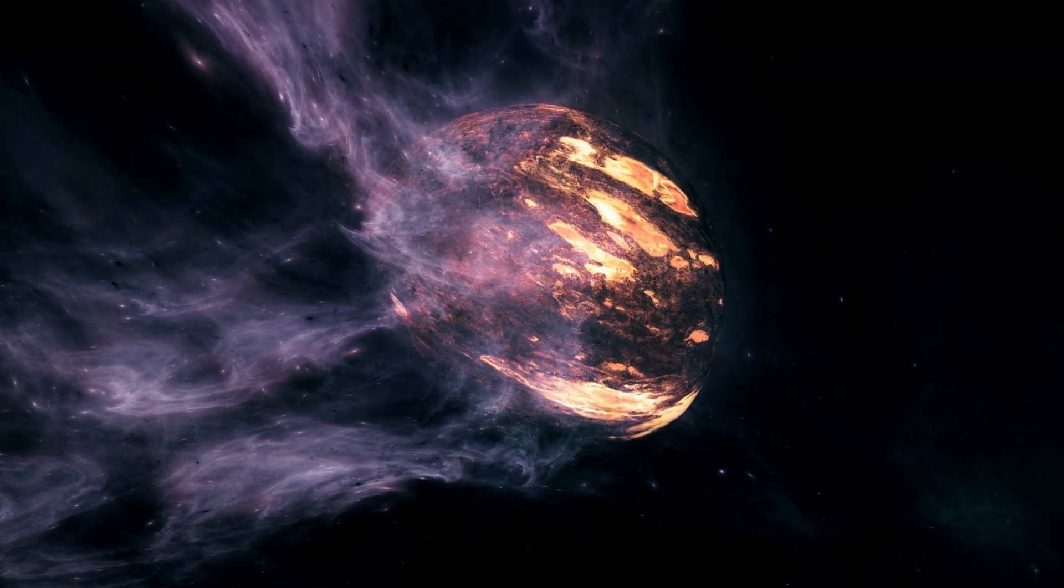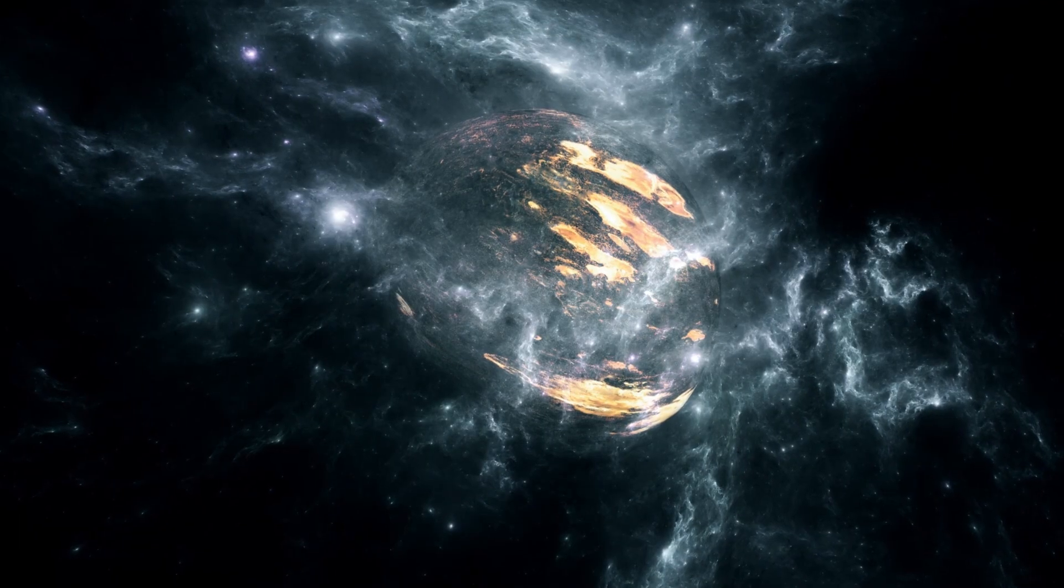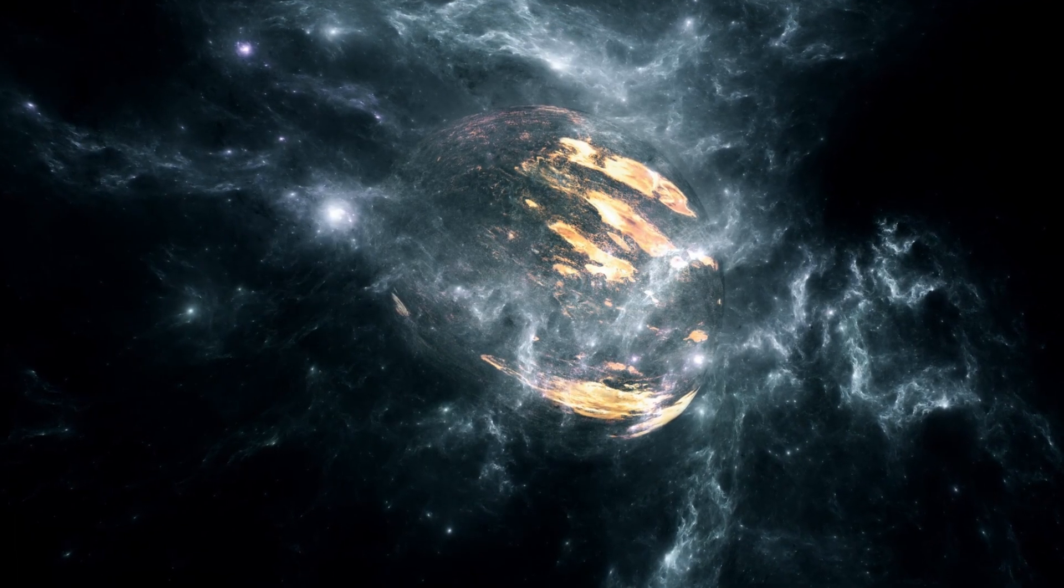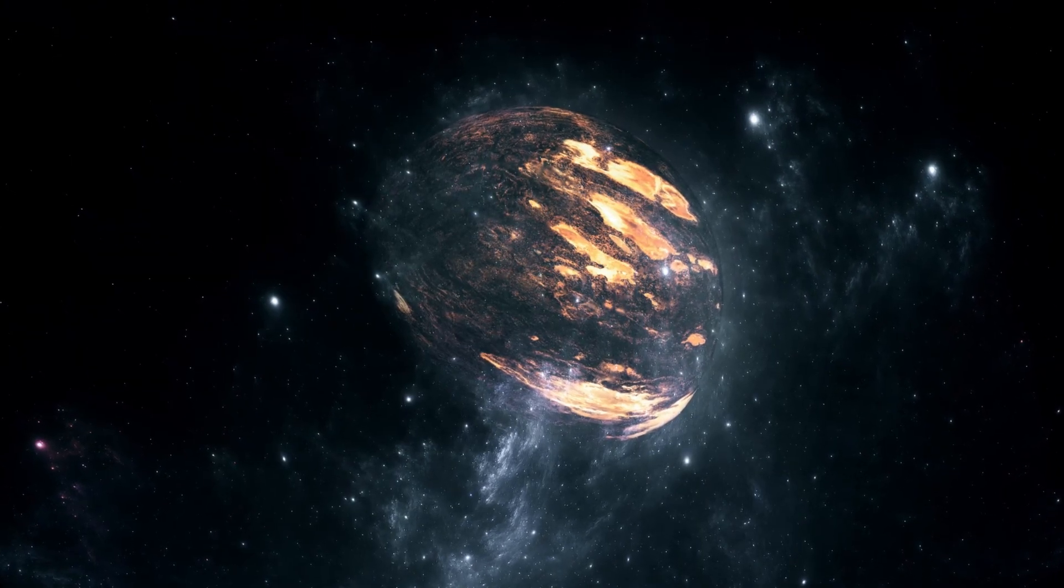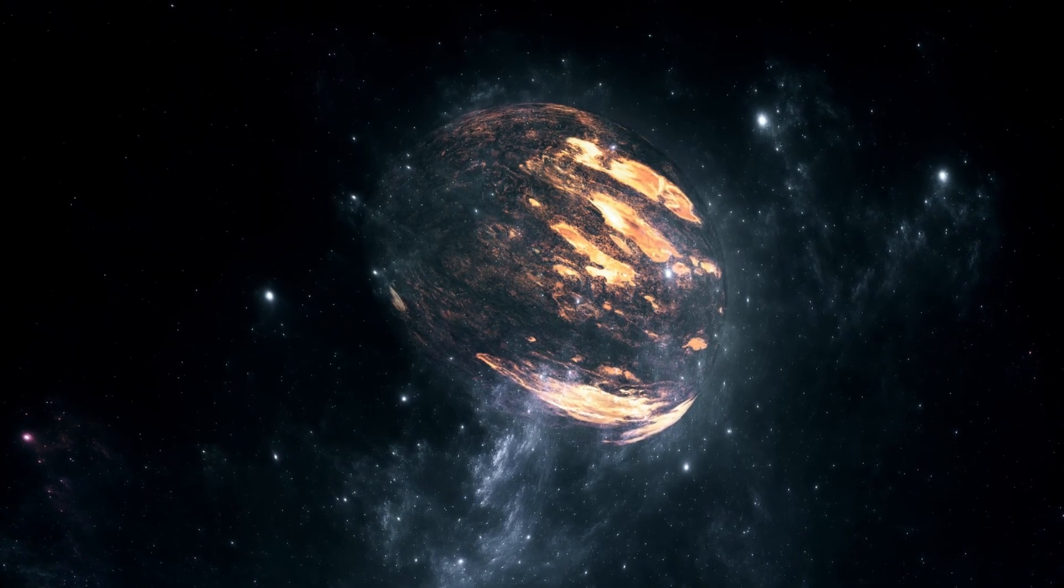This is because Betelgeuse's gas shell is burning. It is gradually running out of hydrogen in its core, where the fusion process converts it to helium, which is expected in a red supergiant.